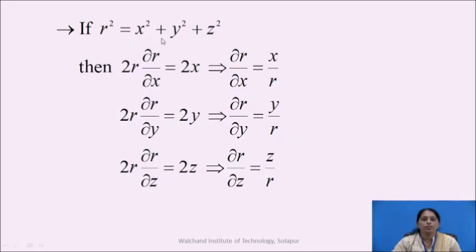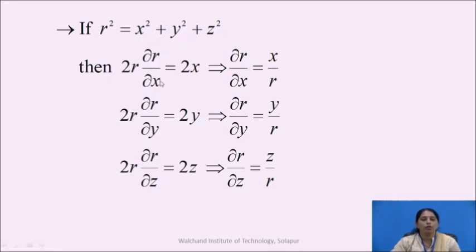If r² = x² + y² + z², it means that r is a function of three variables x, y, and z. So we have to find out the three partial derivatives: ∂r/∂x, ∂r/∂y, and ∂r/∂z. To find ∂r/∂x, we differentiate this equation partially with respect to x. The derivative of r² is 2r, multiplied by ∂r/∂x, equals the derivative of x² which is 2x. Here y and z are treated as constant. So 2r·(∂r/∂x) = 2x, and the 2 cancels from both sides, which gives us ∂r/∂x = x/r.